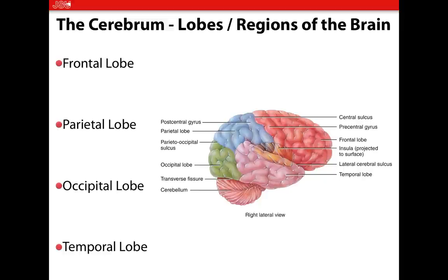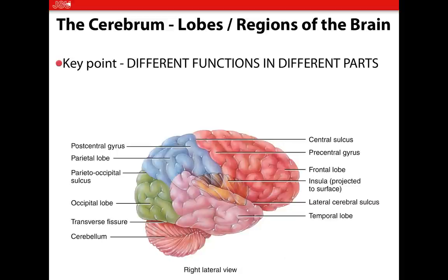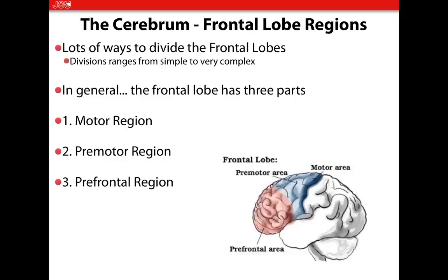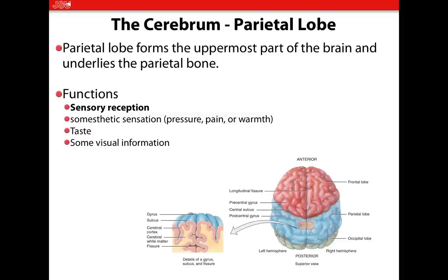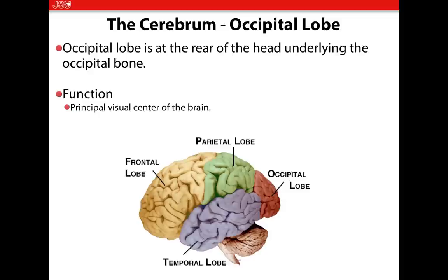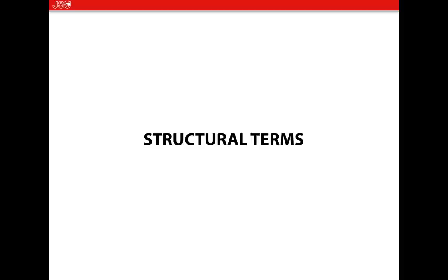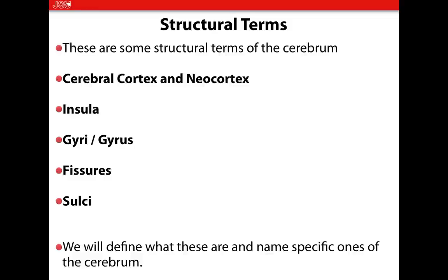The lobes — you have to know the lobes of the brain and the different functions of the lobes. The frontal lobe: key point is voluntary motor function. Parietal: sensory reception. Occipital: major function is vision. Temporal: mainly associated with hearing. We talked about some structural terms to the brain — these are specific structural terms and structural areas of the cerebrum.